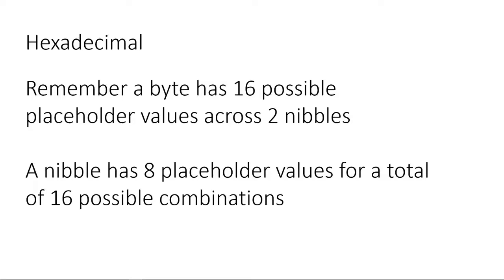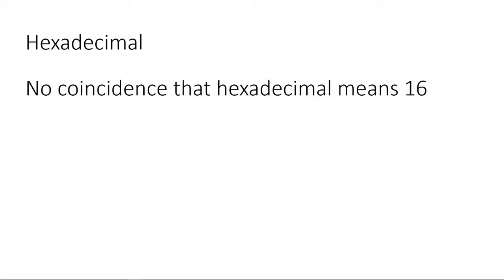We use pairs of nibbles for efficiency. It's no coincidence then that hexadecimal means 16. So let's use this hexadecimal to number all possible variables in a nibble, which is 16. Why? It's easier to look at for one. But more importantly, it takes up less data space on a page.